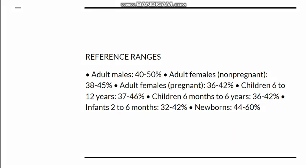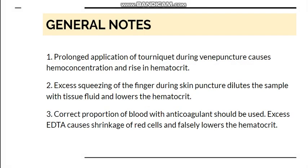Reference ranges vary with physiological condition and sex. In adult males, PCV is 40–50%; in adult females, 38–45%. In pregnant females, PCV is lower at 36–42%, because during pregnancy plasma volume increases more than RBC count. In children it is approximately 37–46%, while newborns have a higher PCV of 44–60%.